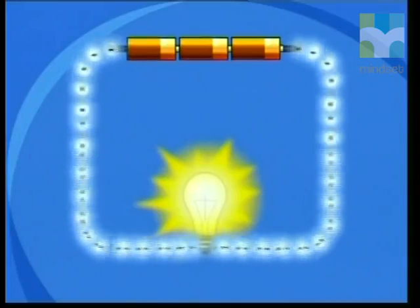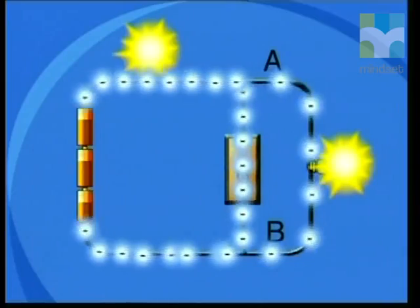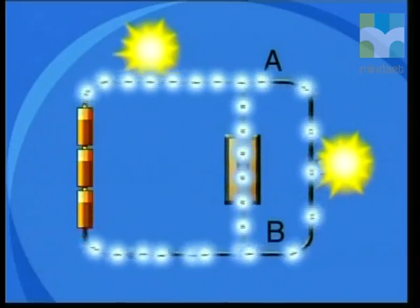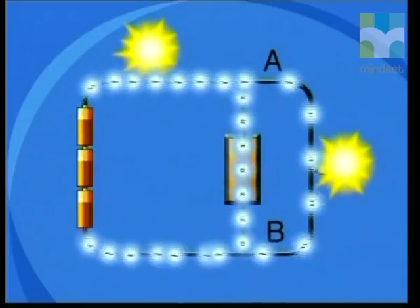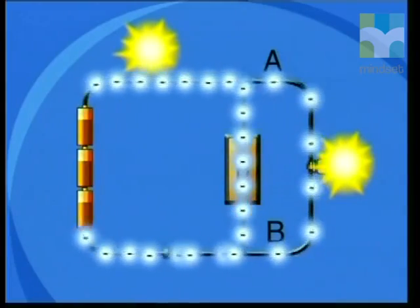Now let's look at a parallel circuit. The difference between a series and a parallel circuit is the way in which the components are connected. In a parallel circuit there are several paths for the electric current to pass through. In a series circuit all the electrons flowed through the components in order; in a parallel circuit the electrons flow through both the resistor and the light bulb at the same time. Some electrons go through the resistor and some go through the light bulb. At point A the total current splits up and takes different paths before the circuit joins back together again at point B.